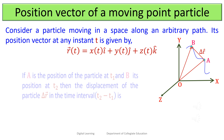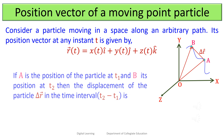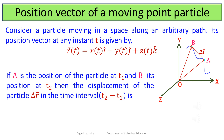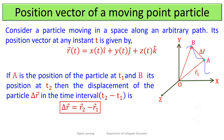If A is the position of the particle at t₁ and B is the position at t₂, then the displacement Δr⃗ in the time interval t₂ − t₁ is given by Δr⃗ = r⃗₂ − r⃗₁, where r⃗₁ is the position vector at A and r⃗₂ is the position vector at B.